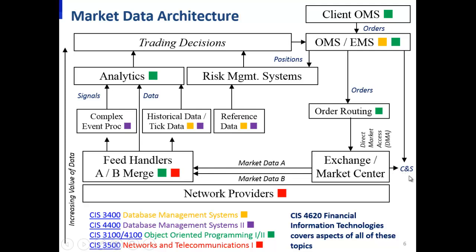When trades happen, they need to get reported for clearing and settlement — an area of back office processing where trades between two counterparties are matched up. Financial firms are voracious consumers of IT and need staff across the board, from infrastructure roles ensuring networks, databases, and operating systems run properly, to software development roles and database administrator roles.